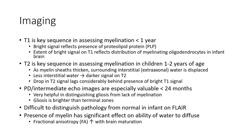PD intermediate echo imaging is useful in children less than 24 months. It is helpful in distinguishing gliosis from lack of myelination. Gliosis is brighter than unmyelinated white matter, making it difficult to distinguish pathology from normal myelination events. Myelination has significant effects on the ability of water to diffuse.